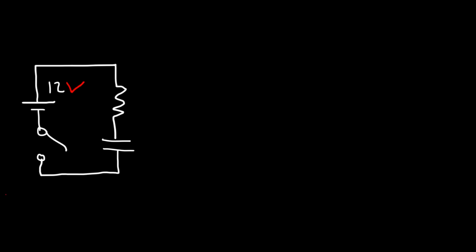In this video we're going to talk about capacitors, particularly when they're charging and discharging. Let's say we have an RC circuit — that is, a circuit containing a capacitor with a resistor — and we're going to have an open switch initially. The voltage of the battery is 12 volts, this is the resistor R, and here we have the capacitor represented by the symbol C.